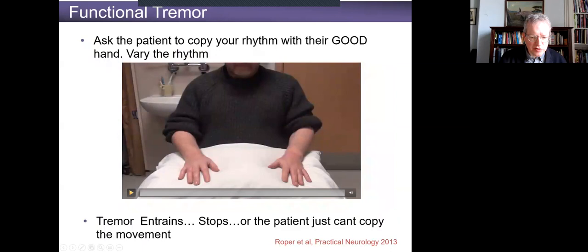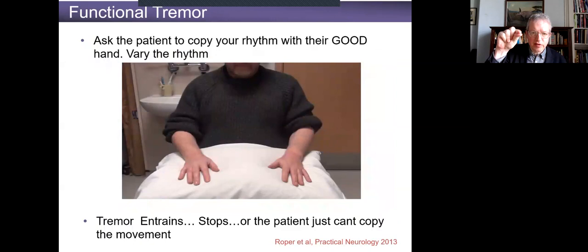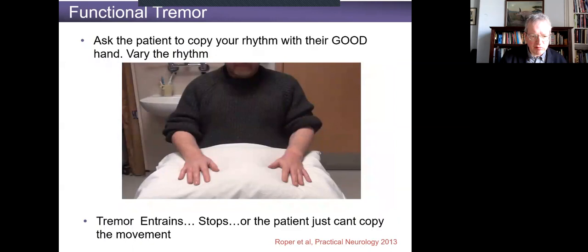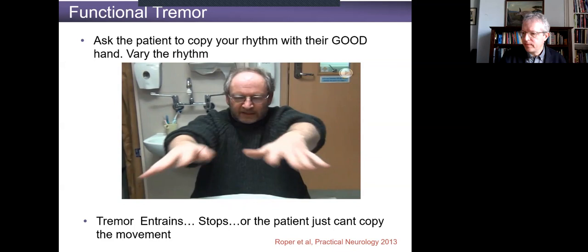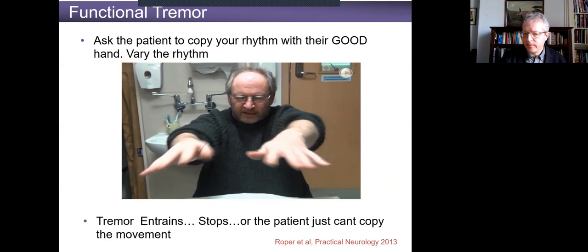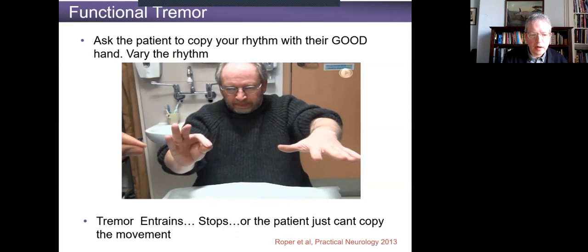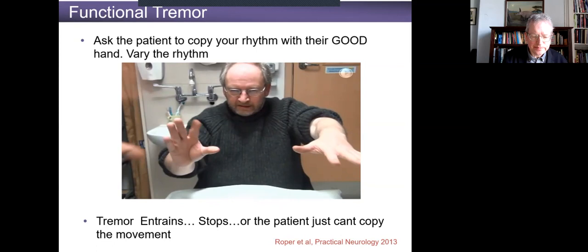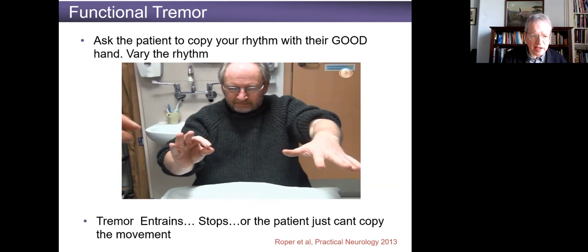This is a patient with functional tremor — a video from Mark Edwards' group. This shows a very simple idea: just asking the patient to copy a movement with thumb and forefinger, speed it up and then slow it down, and see what happens to their tremor. At the beginning of the clip, the examiner is using mental arithmetic to try and distract the tremor, but it's not really working. When the patient tries to copy the movement, the tremor transiently stops, entrains to the same rhythm briefly, and stops again. Sometimes patients just have trouble copying the movement.